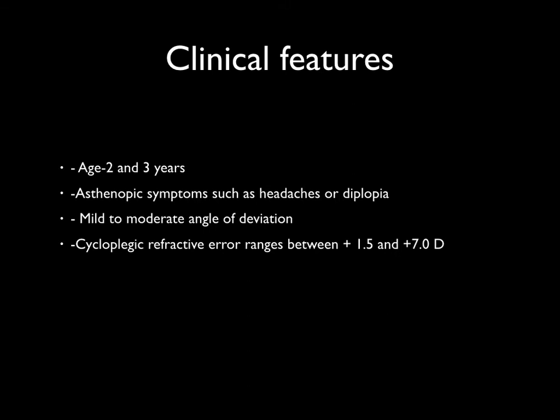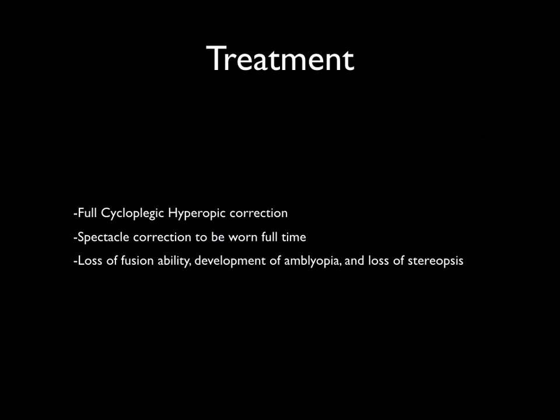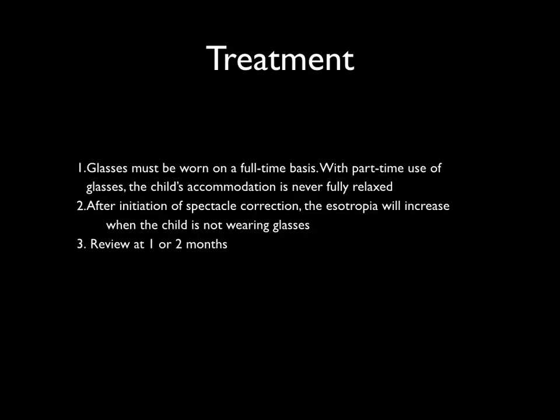The angle of deviation is usually not large, and a full cycloplegic refraction needs to be done and the full cycloplegic prescription given to the child. The cycloplegic refractive error ranges between plus 1.5 to plus 7. Even if parents do not complain of any visual problem, it is important to convince them to use the glasses all the time, as delay would result in loss of fusional ability, loss of binocular single vision, and amblyopia.